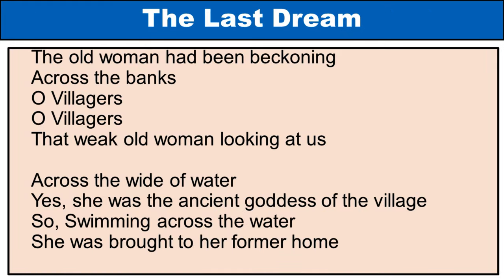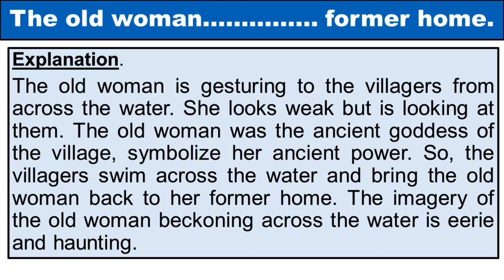Poem lines: 'The old woman had been beckoning across the banks. O villagers! O villagers! That weak old woman looking at us across the wide of water. Yes, she was the ancient goddess of the village. So, swimming across the water, she was brought to her former home.' Explanation: The old woman is gesturing to the villagers from across the water. She looks weak but is looking at them. The old woman was the ancient goddess of the village, symbolizing her ancient power. The villagers swim across the water and bring the old woman back to her former home. The imagery of the old woman beckoning across the water is eerie and haunting. Vyakhya: Boodhi aurat paani ke us paar se grameeróm ko ishaara kar rahi hai. Wah kamzor lag rahi hai lekin unhe dekh rahi hai. Boodhi aurat gaav ki praacheen devi thi. Isliye gaav ke log tair kar paani ke us paar se boodhi aurat ko uske poorv ghar mein wapas le aate hain. Paani ke paar ishaara karti hui boodhi aurat ki kalpana bhayanak aur darawni hai.